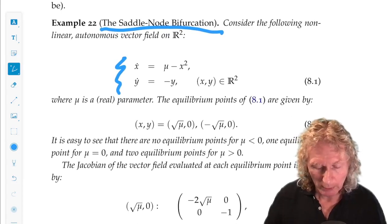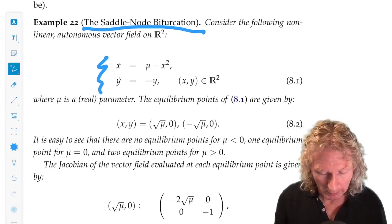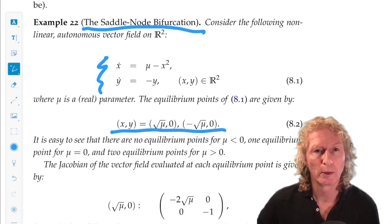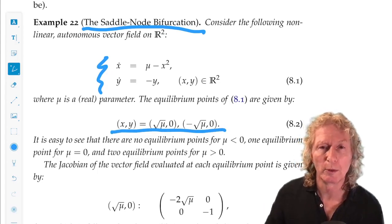We want to compute the equilibrium points, so y has to be zero for any equilibrium point. And we see that there are two equilibrium points for mu positive, no equilibrium points for mu negative,